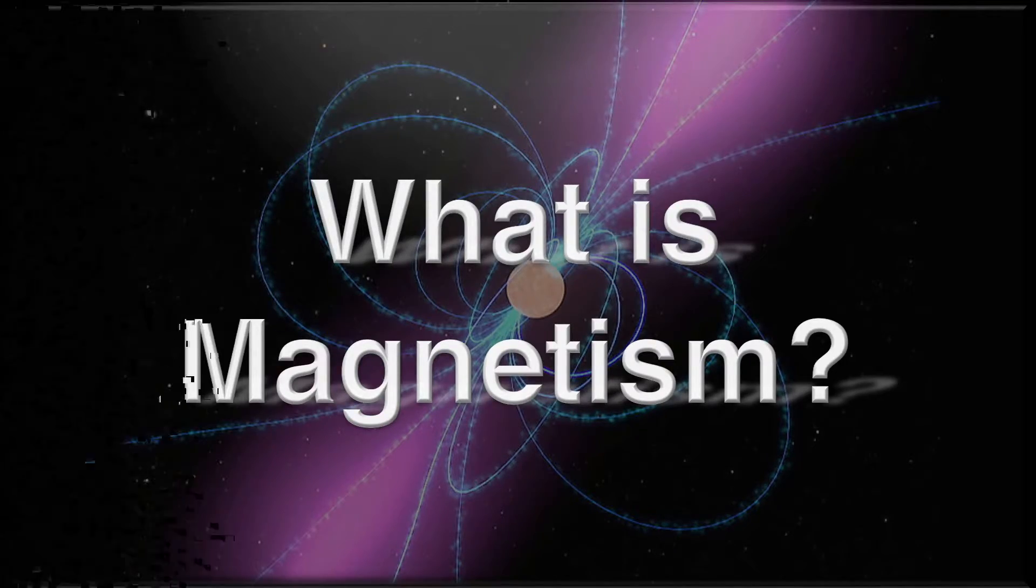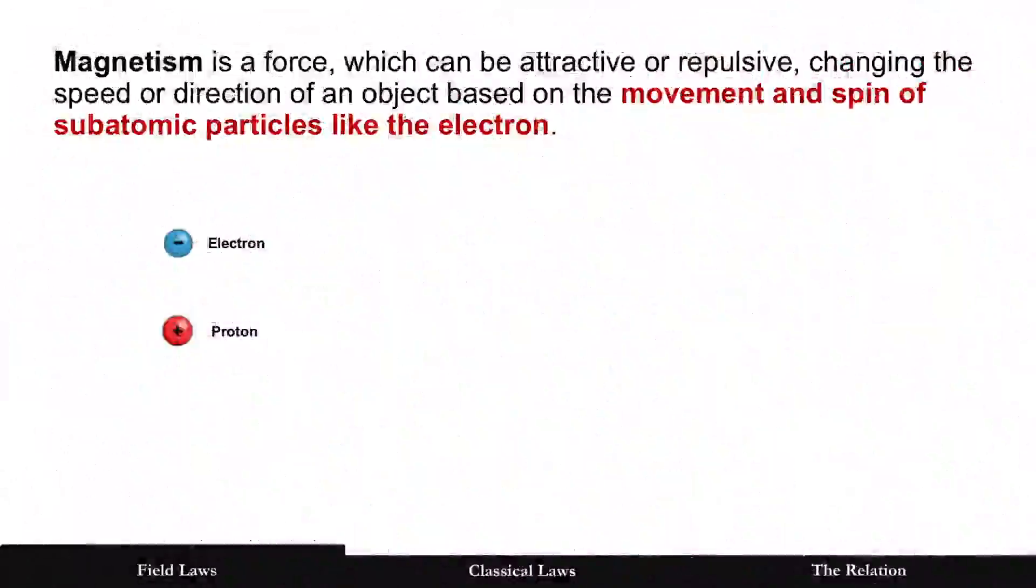What is magnetism? Well, magnetism is a force, right? It causes a change in the speed or direction of an object, which can be attractive or repulsive, and it's based on the movement and spin of particles like the electron.